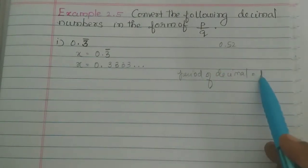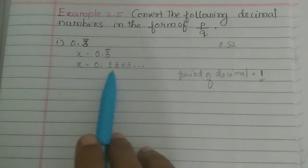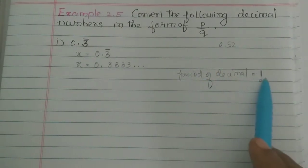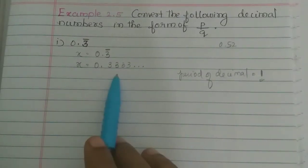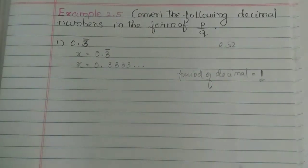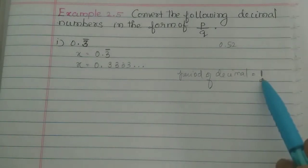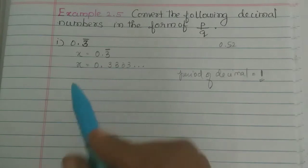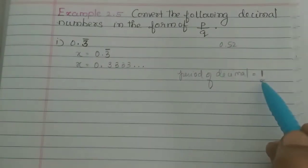If the period of decimal is 1, then 1 multiplied by 10 — we have to multiply with 10. If your period of decimal is 2, then 10 multiplied by 1, plus your period number of decimal. So we can choose the power of 10 based on the period of decimal.